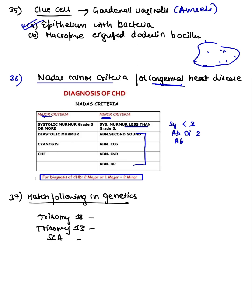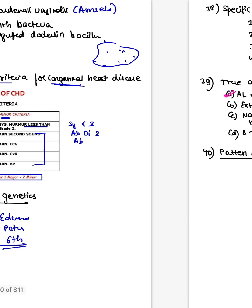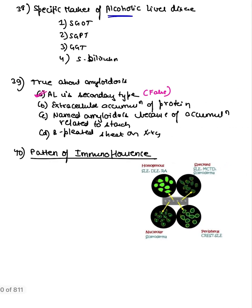Matching trisomies: Down syndrome is trisomy 21, Edwards syndrome is trisomy 18, Patau syndrome is trisomy 13. Sickle cell anemia: at the beta chain, position 6, glutamic acid is replaced by valine — a simple, specific question.